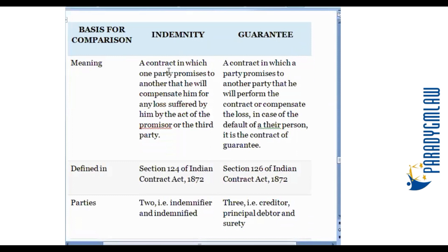In the case of indemnity, it is a contract in which one party promises to another that he will compensate him for any loss suffered by him due to the act of the promisor or any third party. In case of indemnity, one person is promising the other person to undo the harm or to compensate for any loss that the person is suffering due to any act done by the promisor or any third party.